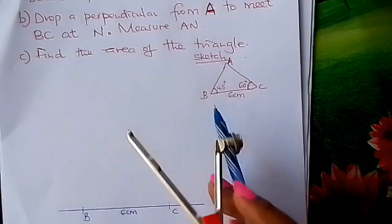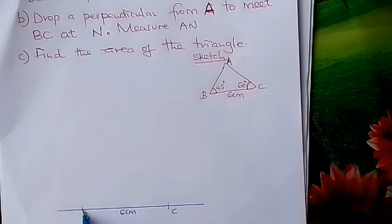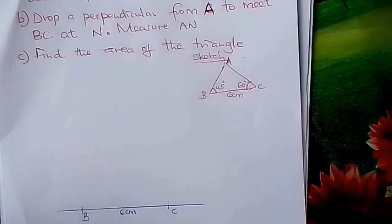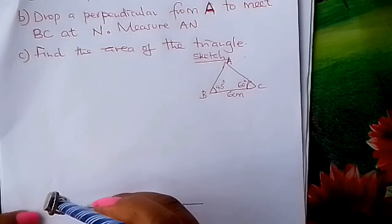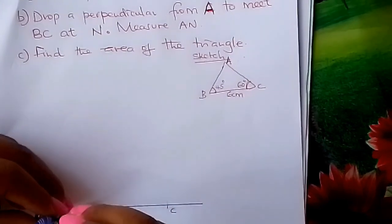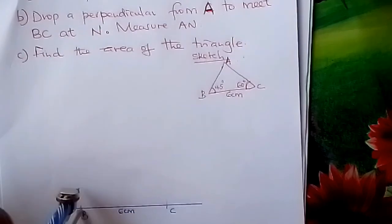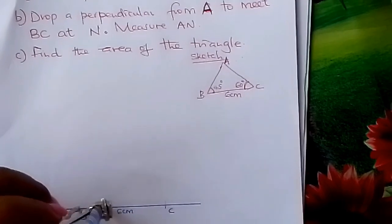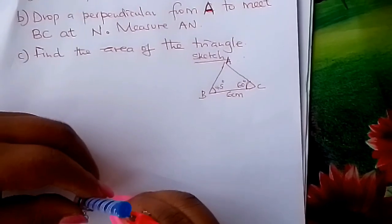From there, we fix an angle of 45 degrees at B using a pair of compasses and a ruler only. To get 45 degrees, we first construct an angle of 90 degrees with the center at B.